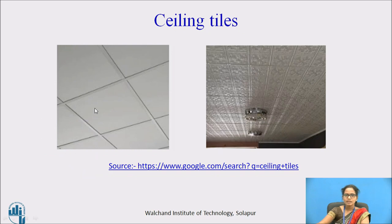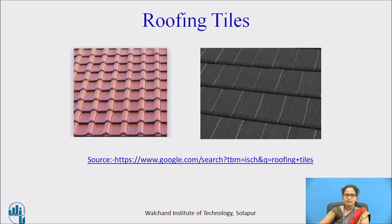The next is the ceiling tiles. The tiles which are laid on the ceiling of the rooms are called ceiling tiles. They are provided for the aesthetic look, for a good appearance. Next is the roofing tiles. The tiles which are used for a single-story room are called roofing tiles. The purpose of the roofing tile is to prevent rainwater from getting inside the room and also to avoid weathering impacts.